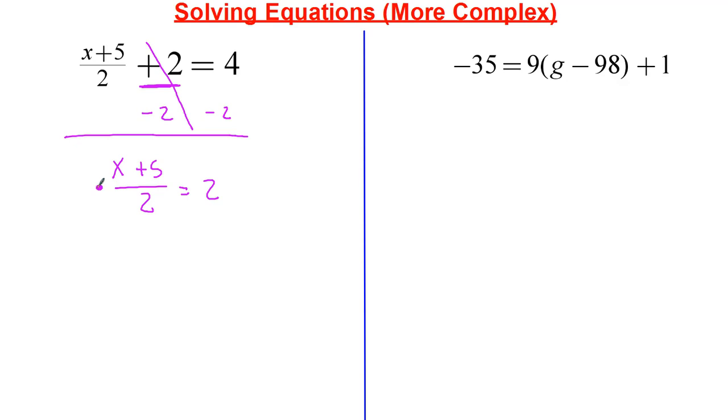Now I'm going to multiply this by 2, and I'm going to multiply this by 2. That gets rid of that. So I have x plus 5 is equal to 4. Now I'm just going to subtract 5 from each side. So x is equal to negative 1.